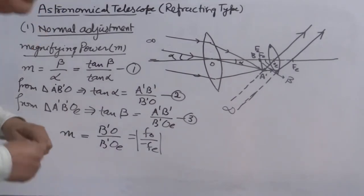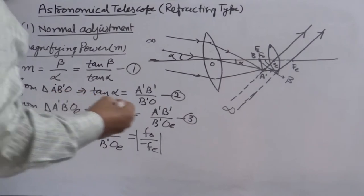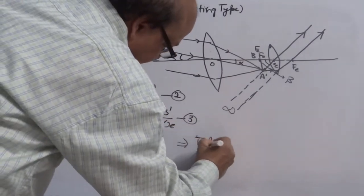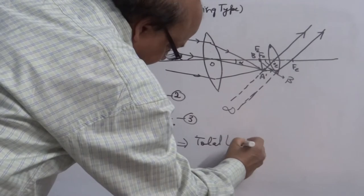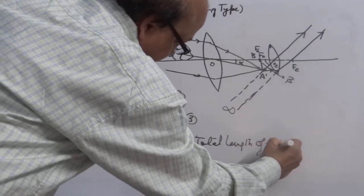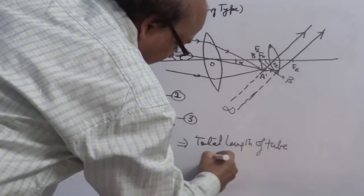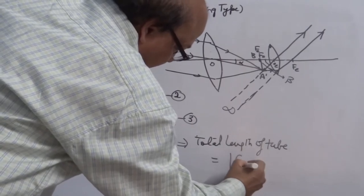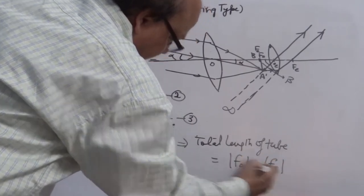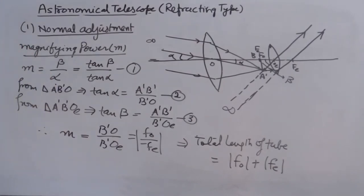The total length of the tube equals |fo| + |fe|. That's how you can calculate it. There are some small numerical problems asked on this topic.